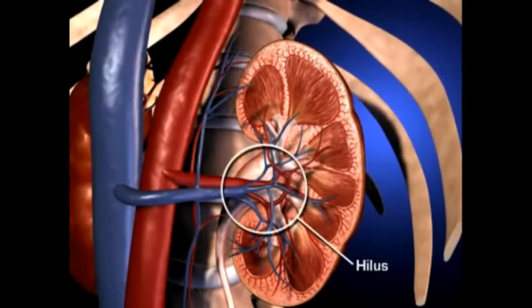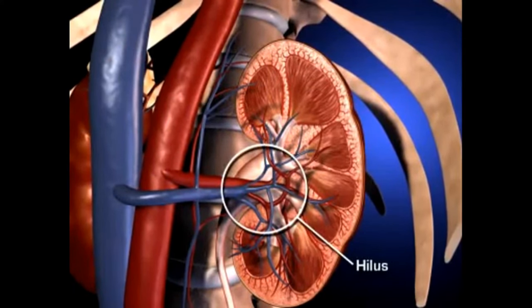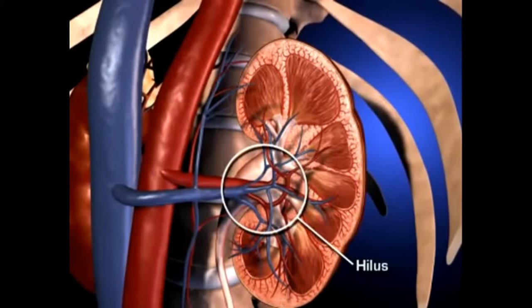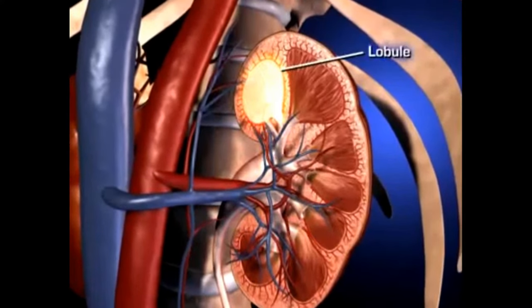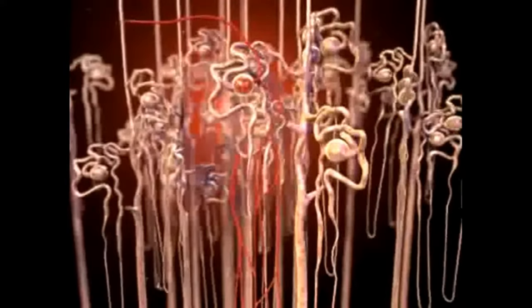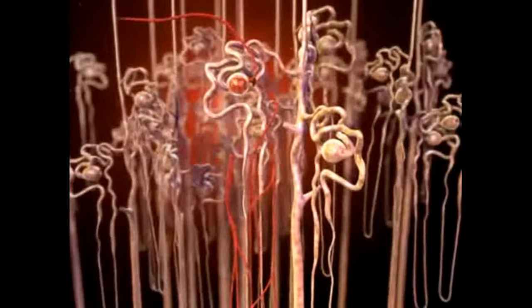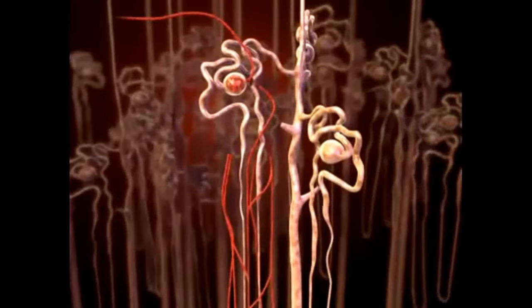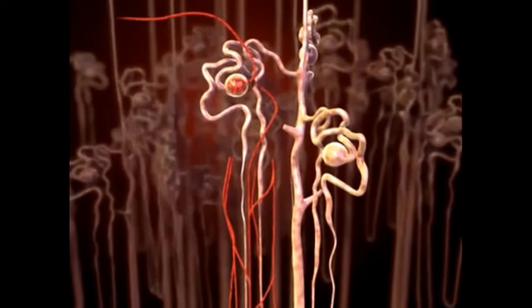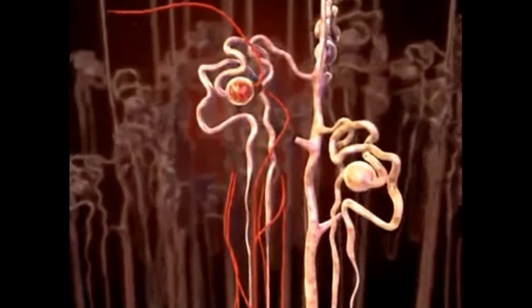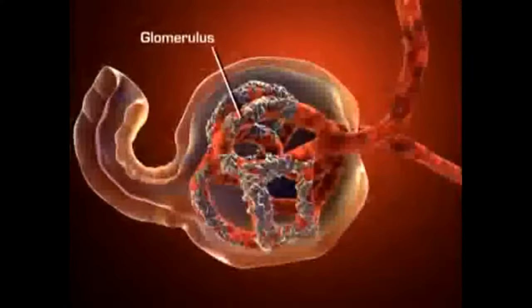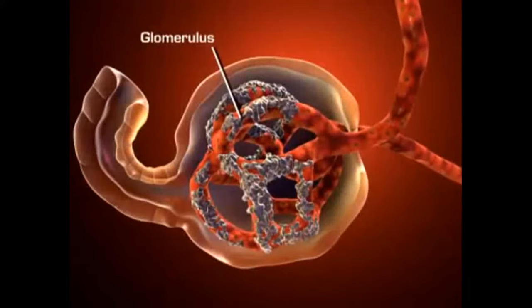The medial border of the kidney is indented by a deep fissure called the hilus, where the blood vessels, nerves, and ureters connect to the kidney. The kidney is composed of up to 18 lobes, and each lobe is composed of nephrons. Nephrons are the functional units of the kidney, and each kidney contains more than one million nephrons. Each nephron consists of a glomerulus and a system of tubules. The glomerulus is a unique high-pressure mass of capillaries that filters the blood.